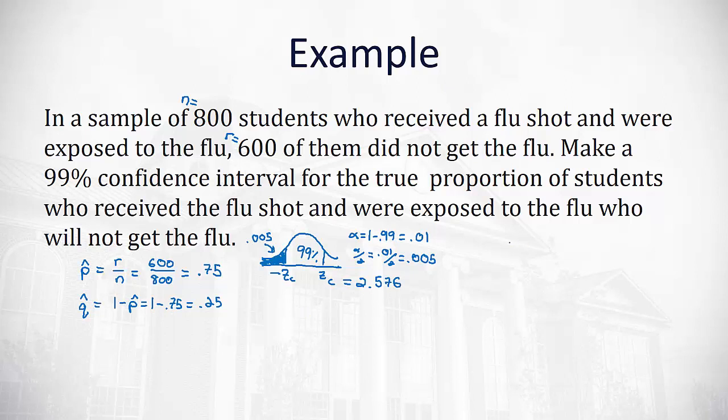We're ready to go to our formula for the error, which is our z sub c value times the square root of p hat q hat divided by the sample size.